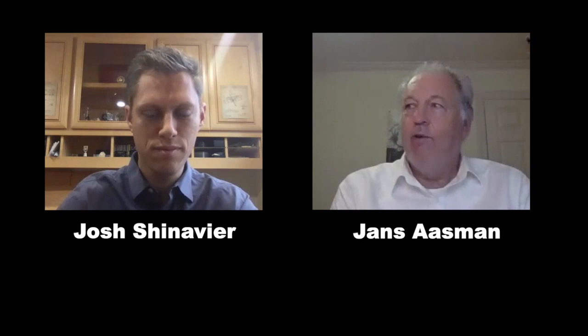It's not so much technological, because I can do anything a property graph database can do, theoretically, and a property graph can do anything an RDF graph database can do. For AllegroGraph, we already for the last five years could add key-value pairs to any triple we wanted, so we already had kind of a property graph database. But now we also will soon have RDF Star and SPARQL Star, where you can add metadata on a triple.